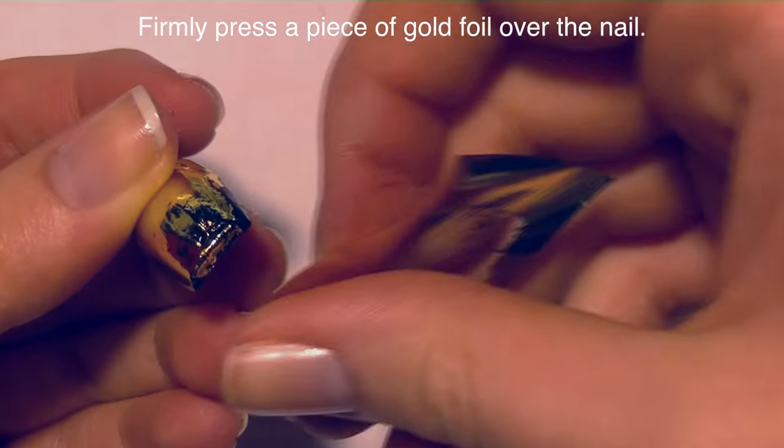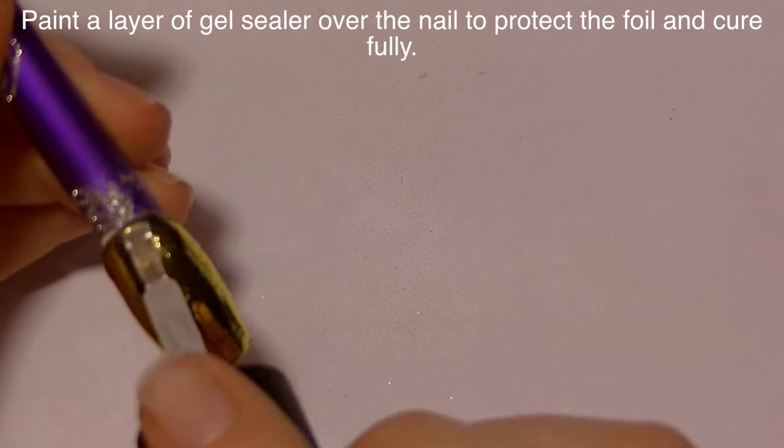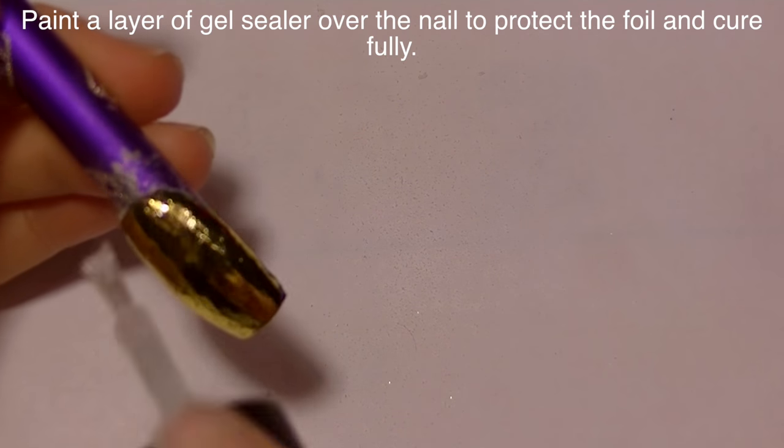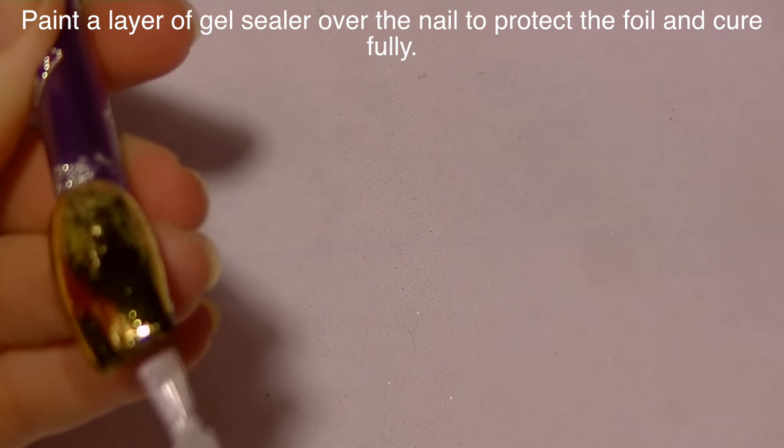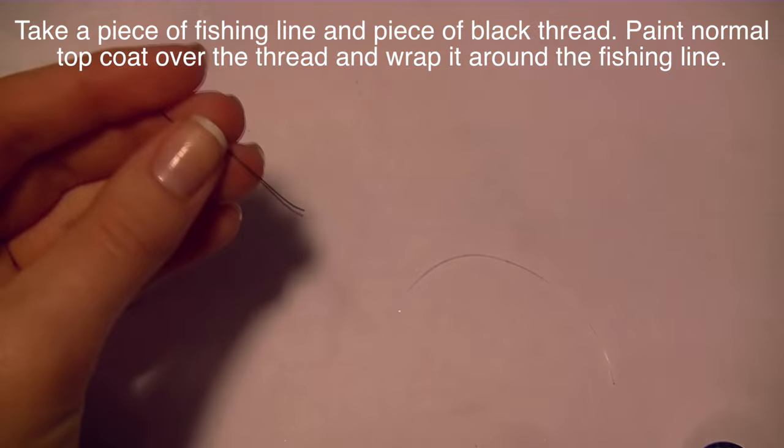I'm just going to take a piece of gold foil and rub it all over my nail. Then apply a layer of gel sealer to protect the gold foil so it doesn't get worn as we continue the design.